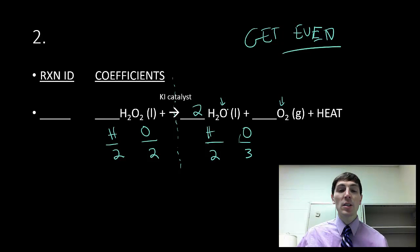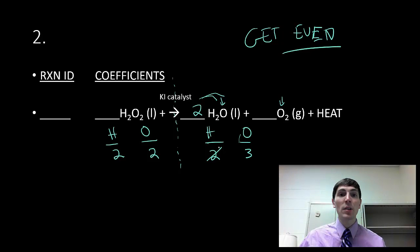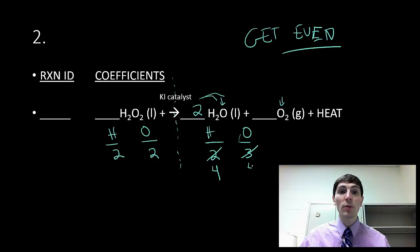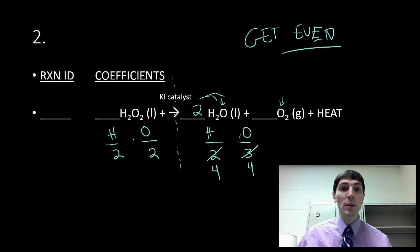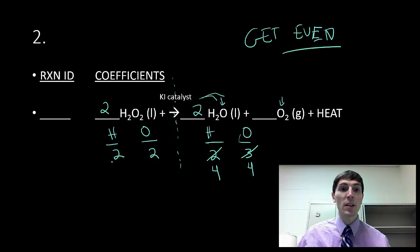So I'm going to put a 2 out in front to double the H2O. As soon as I do that, I need to update my chart. Now on the right-hand side I have 2 times 2 — that subscript — giving me 4 hydrogen. Then 2 times 1 oxygen plus the 2 from the other oxygen compound gives me a total of 4 oxygen on the right-hand side. But looking back at the left-hand side, now I have an imbalance again — I need twice the amount of hydrogen and oxygen. Putting a 2 out in front doubles both at the same time, giving me 4, 4, 4, and 4.